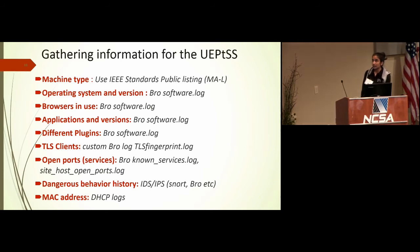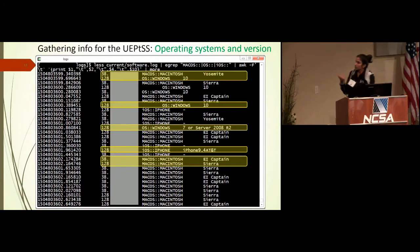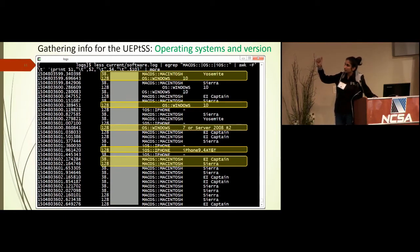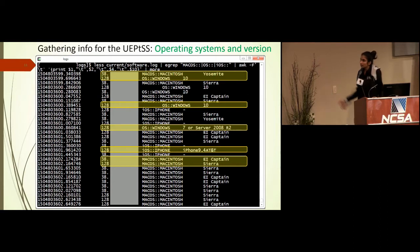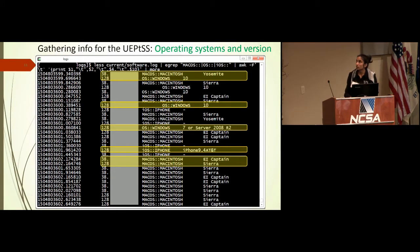Coming back to gathering operating system and version information: I did a cat on software.log and grabbed entries for the three major operating systems we're currently detecting — macOS, Windows OS, and iOS. You can see a system running Windows 10, a system running iOS 9.4, and systems running various macOS versions. This is a simple software.log query and I've included the command line so you can run it yourselves if you have the scripts enabled.